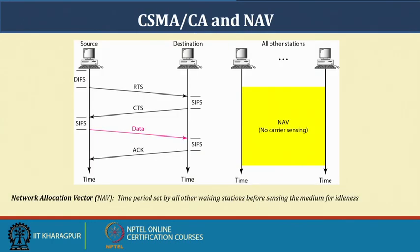Looking at the timing diagram: the source waits for DIFS, sends RTS; the destination waits for SIFS and sends CTS; the source waits for SIFS and sends data; the destination waits for SIFS and sends an acknowledgement. During this phase, the Network Allocation Vector (NAV) is set by all other stations within the sensing zone, because the RTS and CTS frames contain information about how much time is required — those stations wait before checking whether the channel is idle. This handles the hidden and exposed station problems.